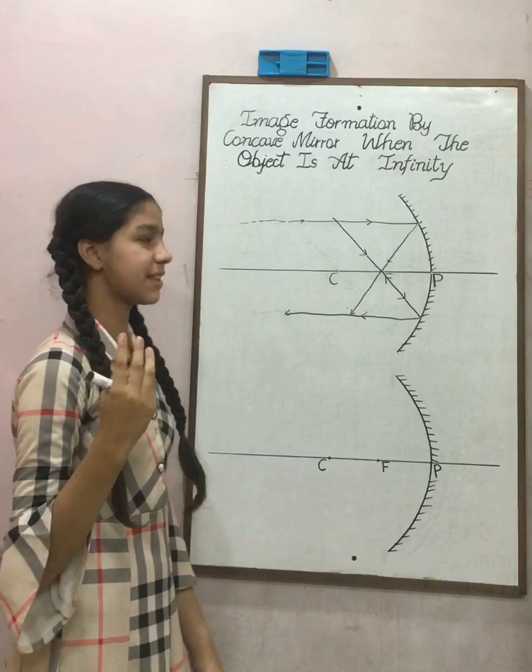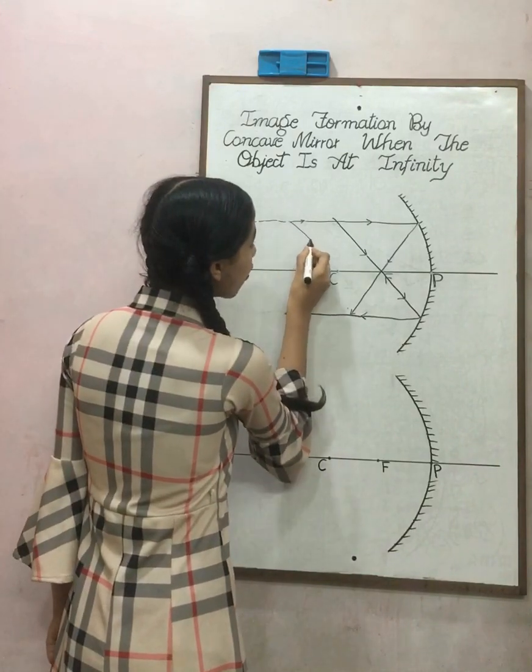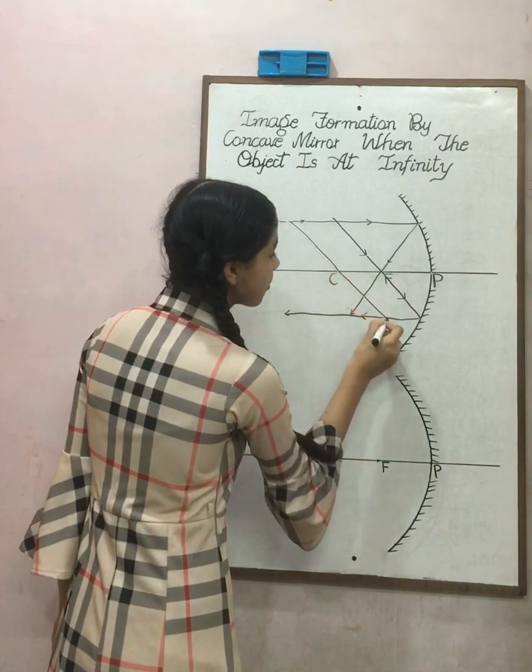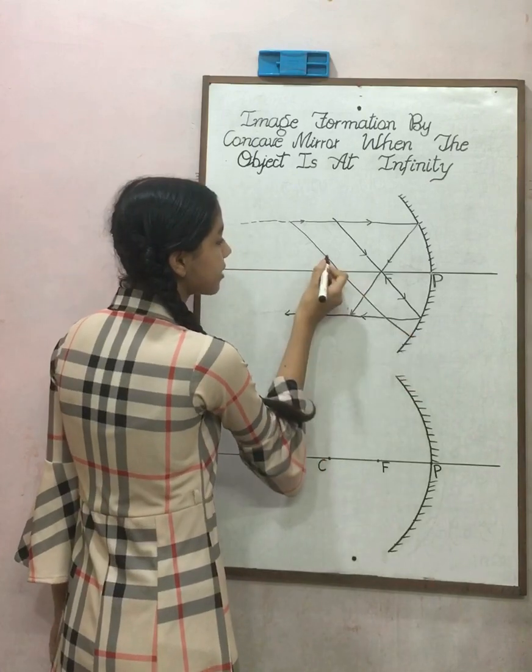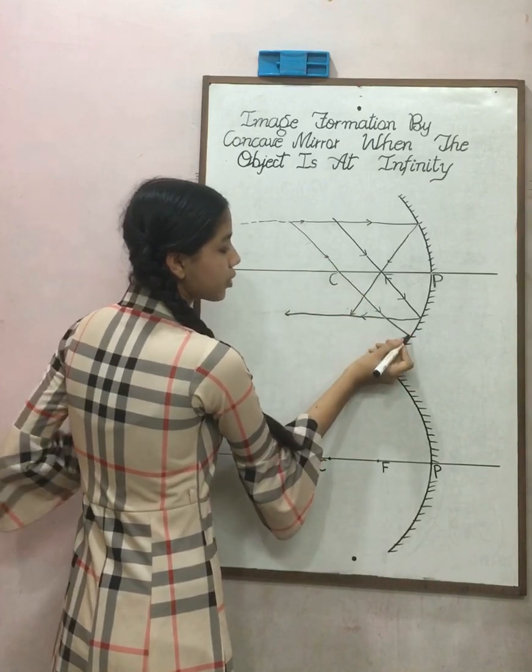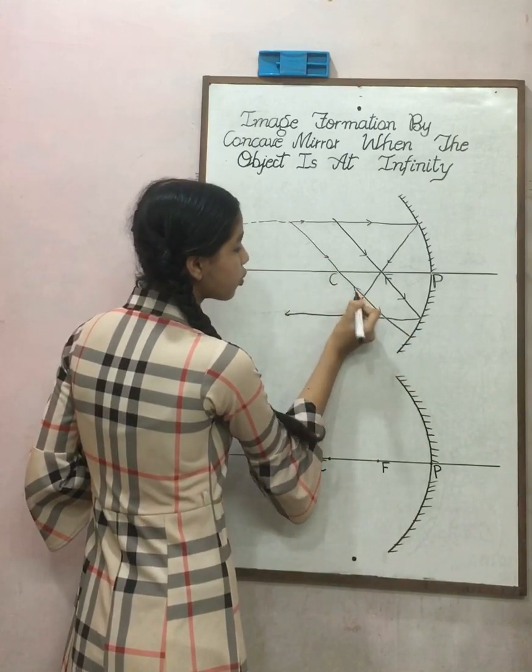The third condition is, when the ray of light goes from the center of curvature, then after striking at the mirror, it goes from the same path through which it comes.